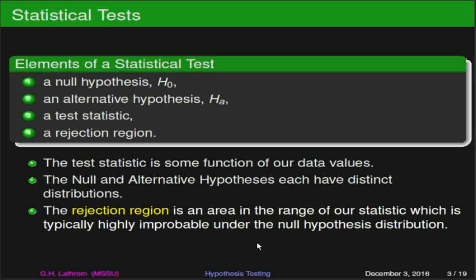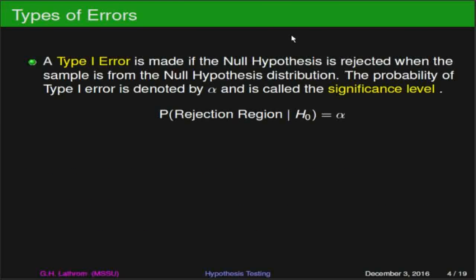Of course, we are conducting experiments and so we will have errors — two types of errors that we'll be concerned with in hypothesis testing. The first error, a type 1 error, is made if the null hypothesis is rejected when the sample that we took is actually from the distribution of the null hypothesis. The probability of a type 1 error we usually denote by the symbol alpha, and alpha is called the significance level. So the probability of the rejection region given the null hypothesis is just our significance level alpha.